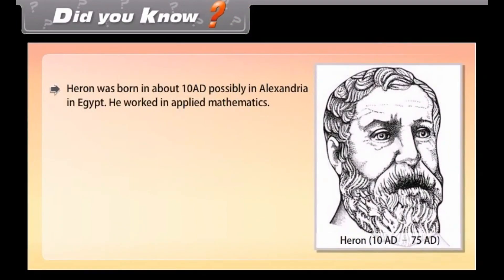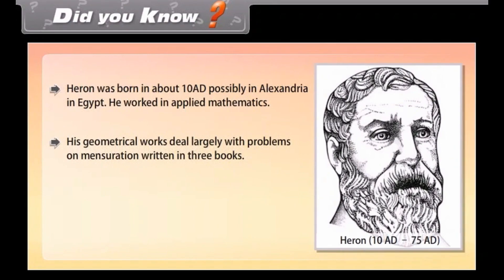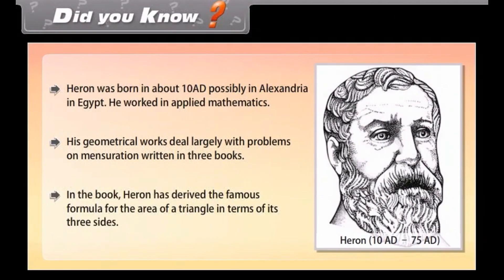Heron was born in about 10 AD, possibly in Alexandria in Egypt. He worked in applied mathematics. His geometrical works deal largely with problems on mensuration, written in three books. In the book, Heron derived the famous formula for the area of a triangle in terms of its three sides.